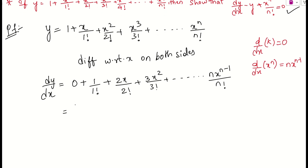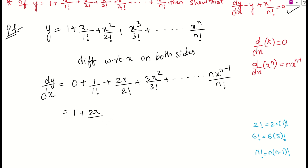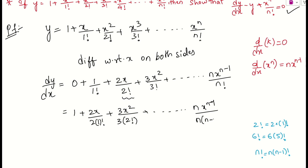Now let us simplify term by term. We know that n factorial equals n times (n minus 1) factorial. For example, 2 factorial equals 2 times 1 factorial, and 3 factorial equals 3 times 2 factorial. Applying this to each term: the 2 in the numerator cancels with the 2 in 2 factorial, the 3 cancels with the 3 in 3 factorial, and similarly n cancels with n in n factorial for the last term.